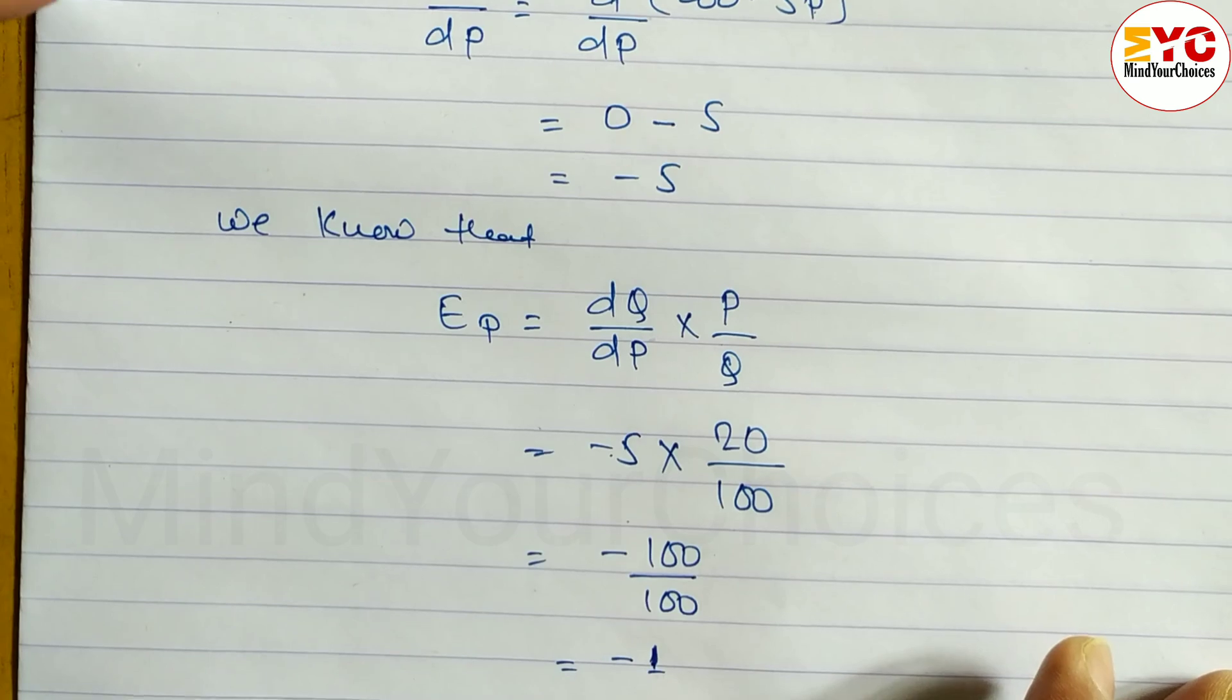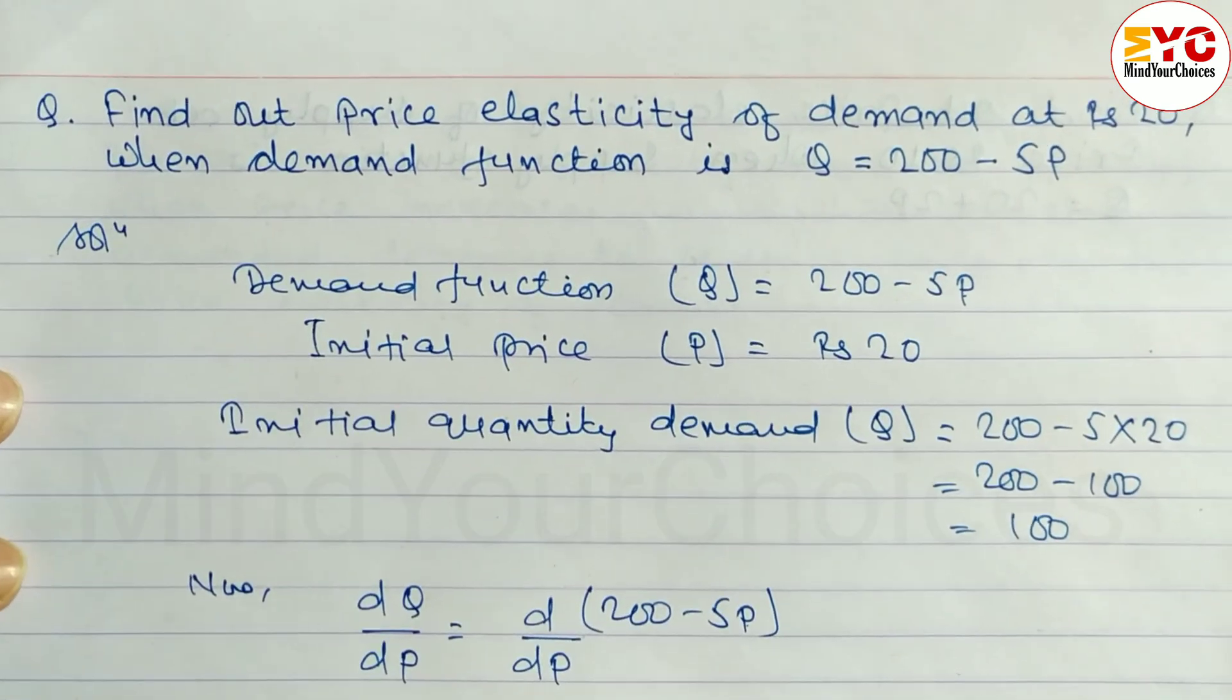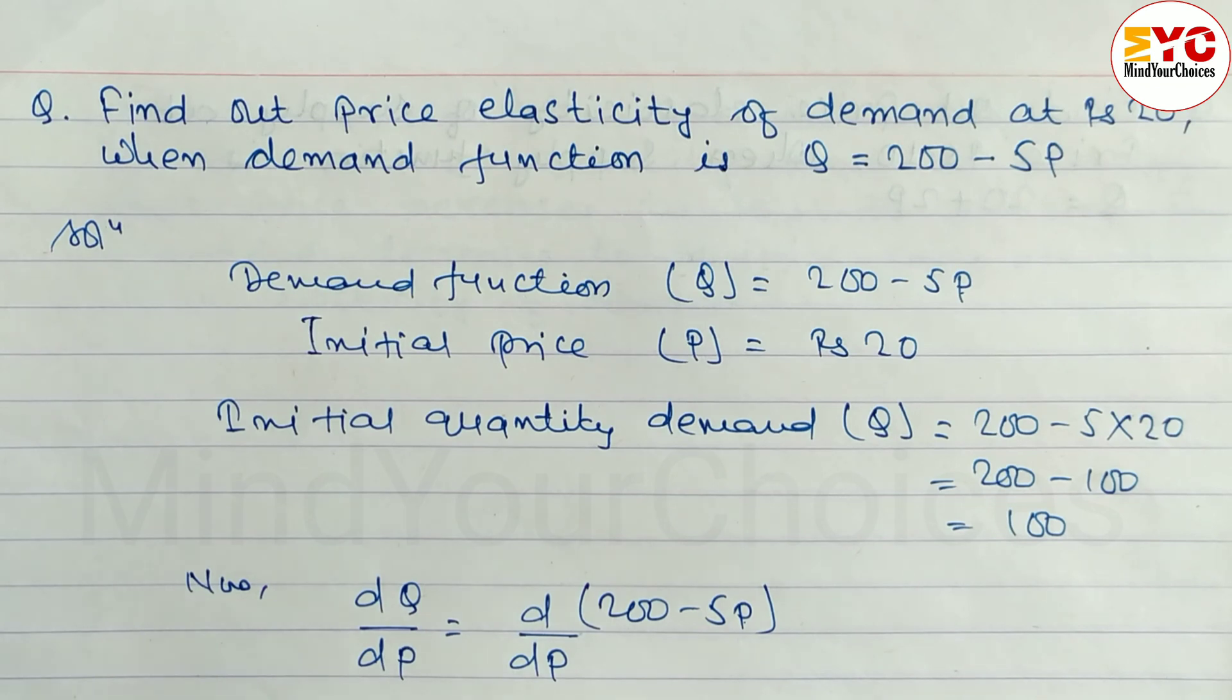So the price elasticity of demand equals minus 1. Hope you understand this question. If you're new on my channel, please consider subscribing. Thanks for watching till the end.